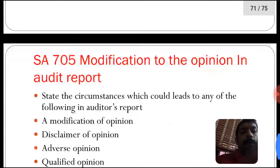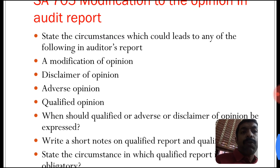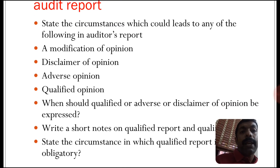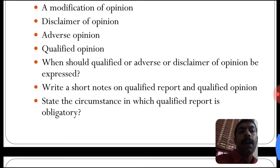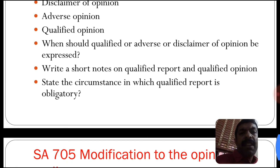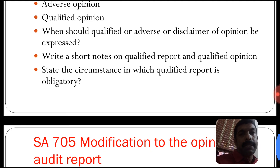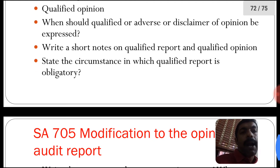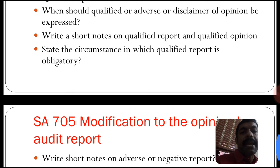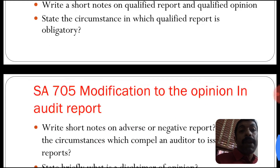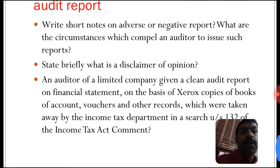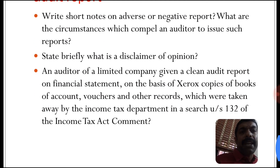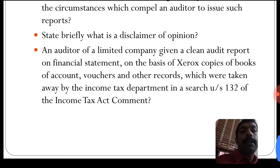State the circumstances which could lead to any of the following in the auditor's report: modification of opinion, disclaimer of opinion, adverse opinion, and qualified opinion. When should a qualified, adverse, or disclaimer opinion be expressed? Write a note on the qualified audit report and qualified opinion. State the circumstances in which a qualified report is obligatory. Write a note on the adverse or negative report and the circumstances which compel an auditor to issue such a report.